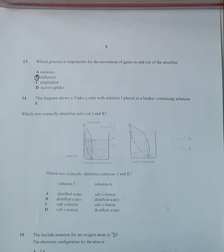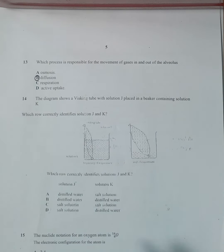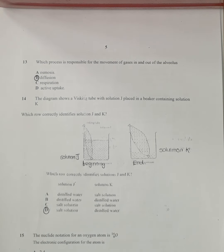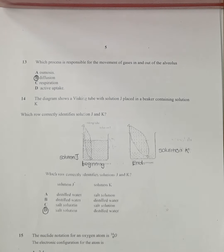Number 14: the diagram shows a visking tube with solution J placed in a beaker containing solution K. We are going to select D as our answer. J is salt solution and K is distilled water. Water moves from solution K into the visking tube by osmosis, causing the tube to expand. This is because it was placed in distilled water.